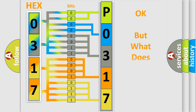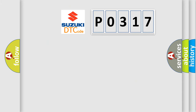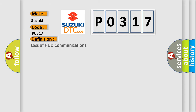The number itself does not make sense to us if we cannot assign information about what it actually expresses. So, what does the diagnostic trouble code P0317 interpret specifically for Suzuki car manufacturers? The basic definition is: loss of HUD communications.